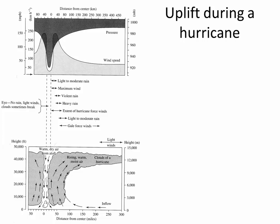Air that is very moist at the surface of the water is lifted. This figure on top is showing how far away you are from the center of a hurricane and the precipitation amounts. There's light to moderate rain right at the center, heavy rain further out, and the rain decreases as you get further from the location of the lifting.